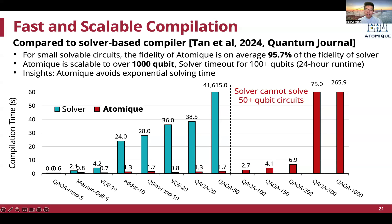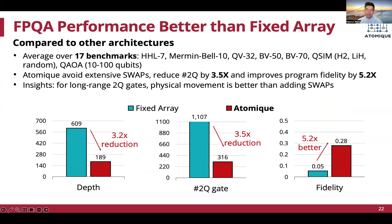We then compare FPQA with fixed atom arrays, averaged over 17 representative benchmarks. Atomic achieves on average 3.2x reduction in circuit depth, 3.5x reduction in two-qubit gate count, and 5.2x improvement in program fidelity. The source of improvement is mainly from FPQA's ability to leverage physical atom movements instead of executing extensive swap gates to perform long-range two-qubit gates.